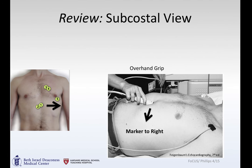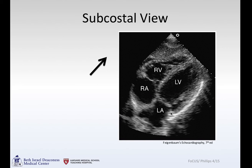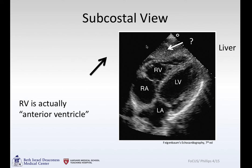Review from last time: the subcostal view — using your overhand grip, marker towards the right, coming underneath the ribs — opens up the heart. You're seeing first the right ventricle, right atrium, left ventricle, left atrium. And do not be fooled: this is the liver, not a large effusion. The pericardium you can see is a bright line.